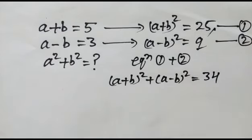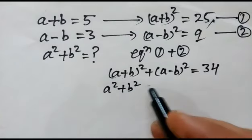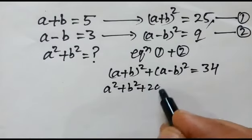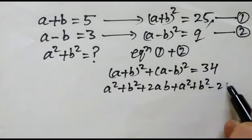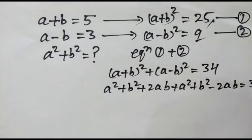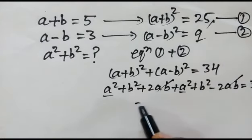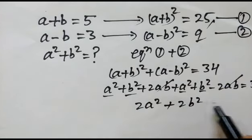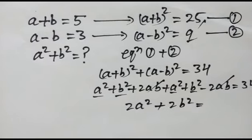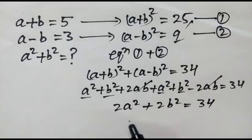Expanding: a² + b² + 2ab + a² + b² - 2ab = 34. The +2ab and -2ab cancel out, leaving 2a² + 2b² = 34.